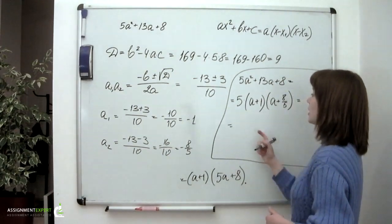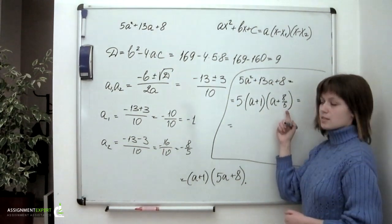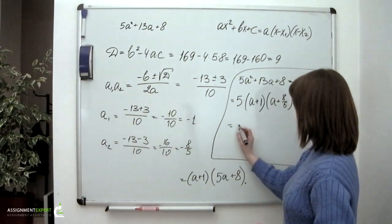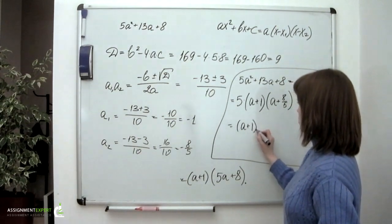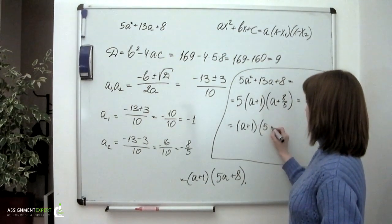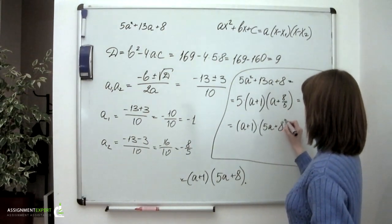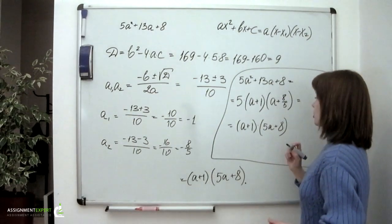Or we may multiply 5 and this second factor. So we'll have a plus 1 times 5a plus 8. And no surprises, we obtained the same result as the first time.